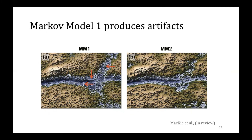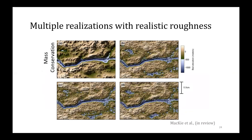These are zoomed-in realizations using Markov models one and two. We can see glaring simulation artifacts in Markov model one. This is most likely because Markov model one can underestimate the redundancy between the primary and secondary variables, causing the simulation to over-correlate with the mass conservation topography. For this reason, we're going to use Markov model two from here on out. We generated an ensemble of 250 realizations using Markov model two.